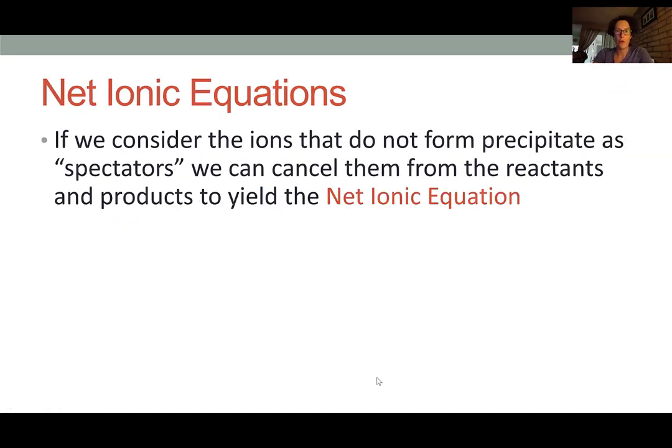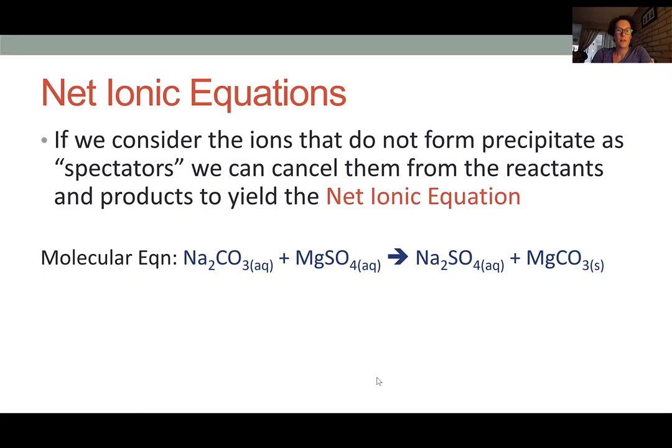Let's look at how we would write out equations to describe these types of reactions. The goal is to simplify a molecular equation to get down to the species that directly create the product. This is called a net ionic equation. Here's an example of a reaction between sodium carbonate and magnesium sulfate, forming sodium sulfate and magnesium carbonate. The same example that we saw in the slides before.